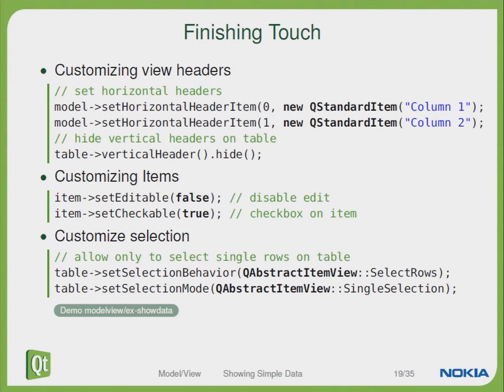So let's do some further customizing. We can customize the view headers by setting the horizontal headers, for example. Here is the sample code on how to set a horizontal header item, which we name column 1 and 2, and we just hide the vertical headers.